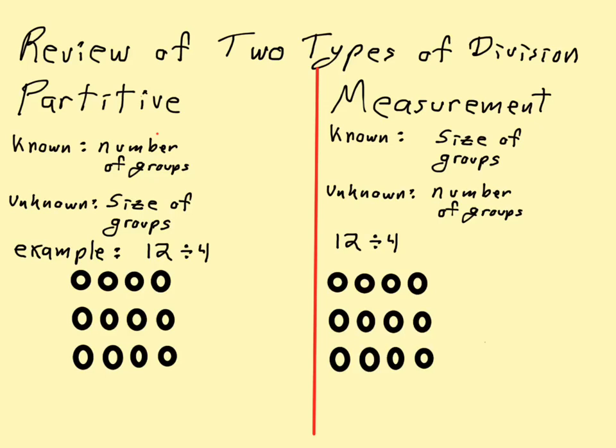First of all, we've got what's called partitive division. Partitive is when you know the number of groups and the unknown is the group size. So imagine you're splitting something up into equal-sized parts—that's the partitive.